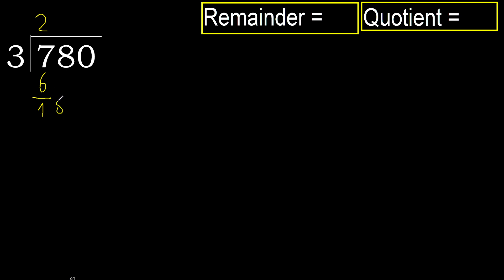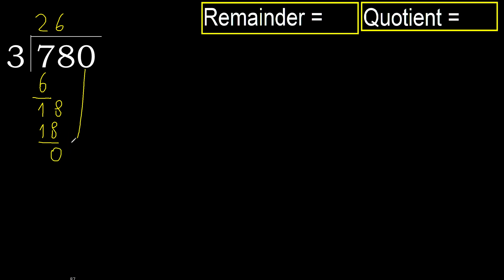Next. Bring down 8, making 18. 3 multiplied by 6 is 18 — 18 is not greater. 18 minus 18 is 0.